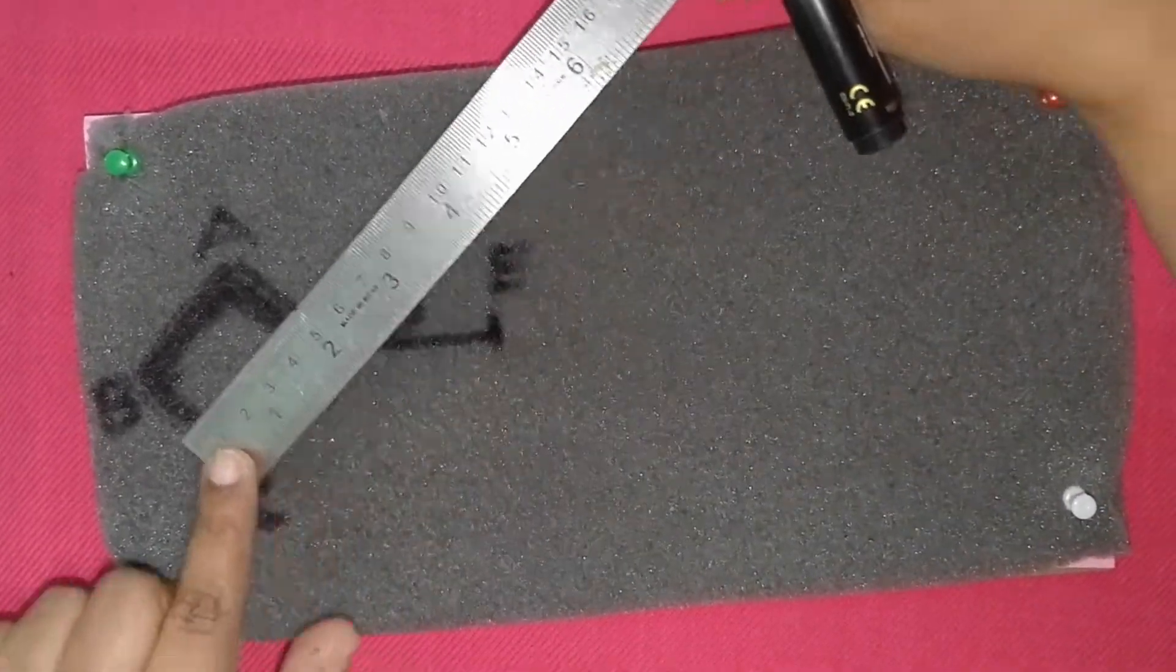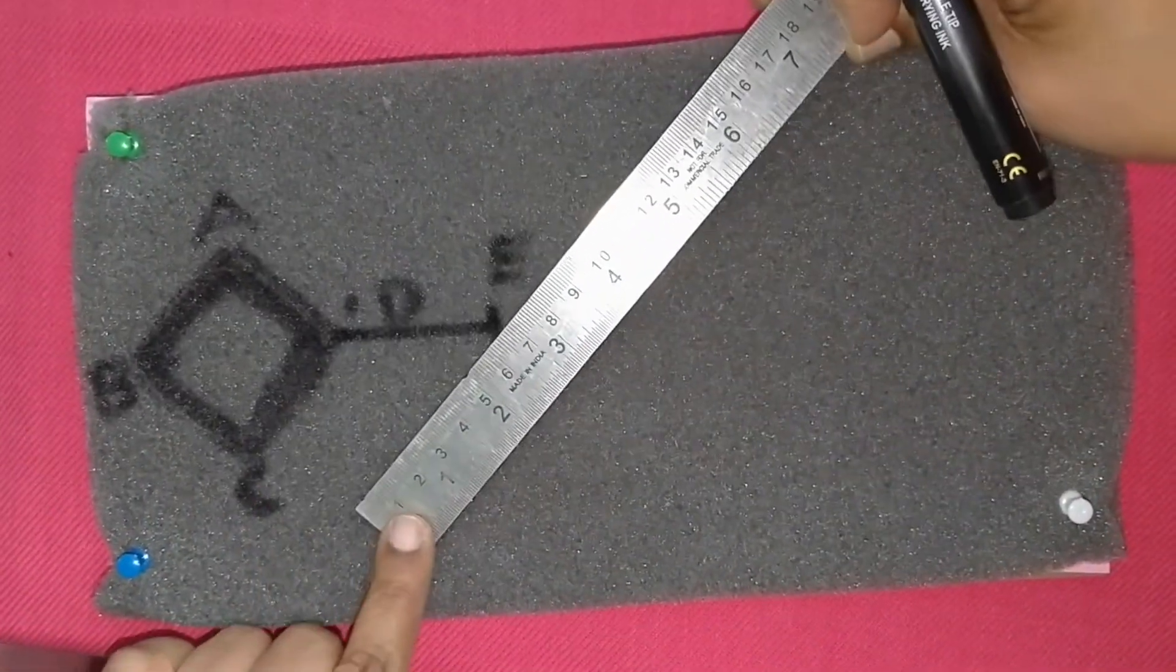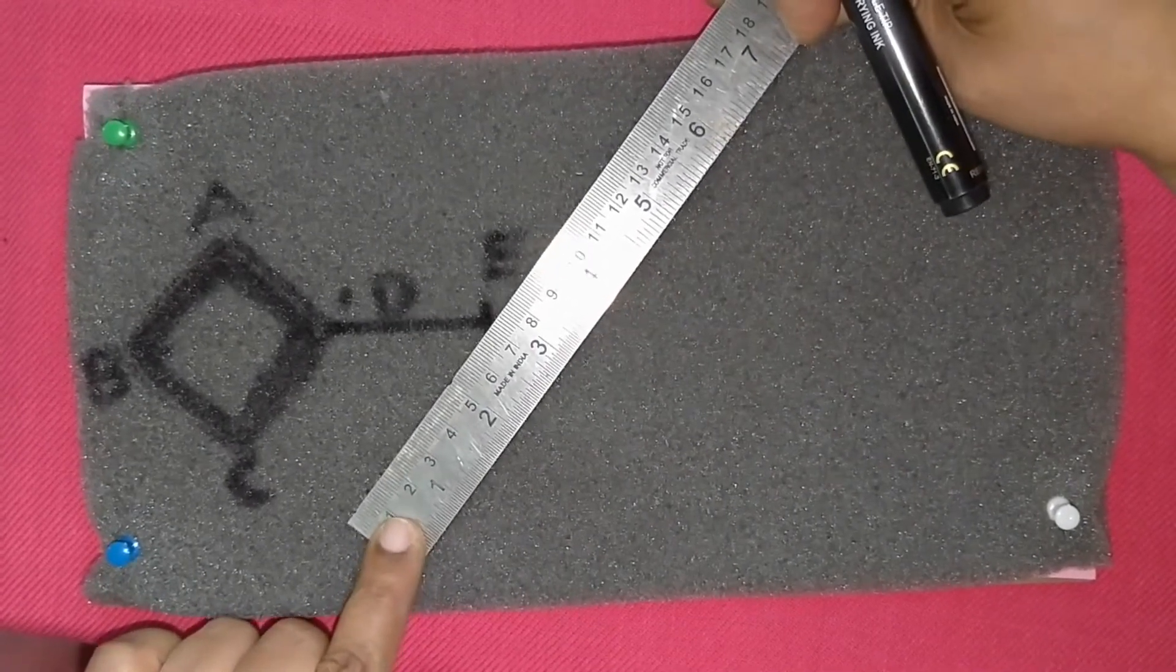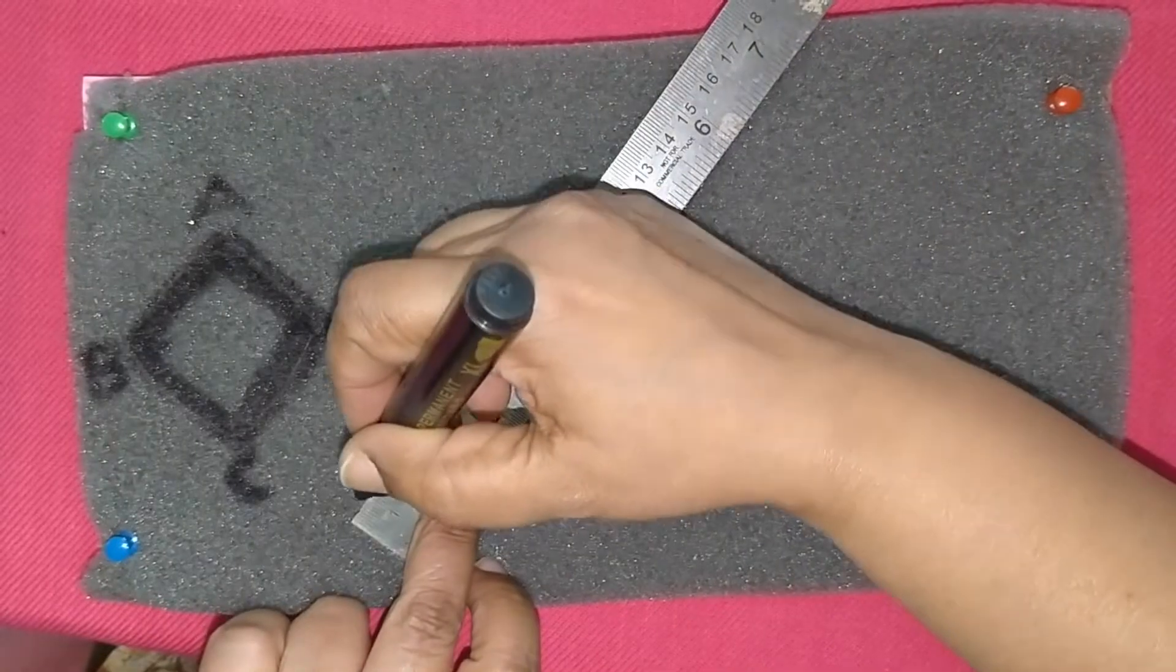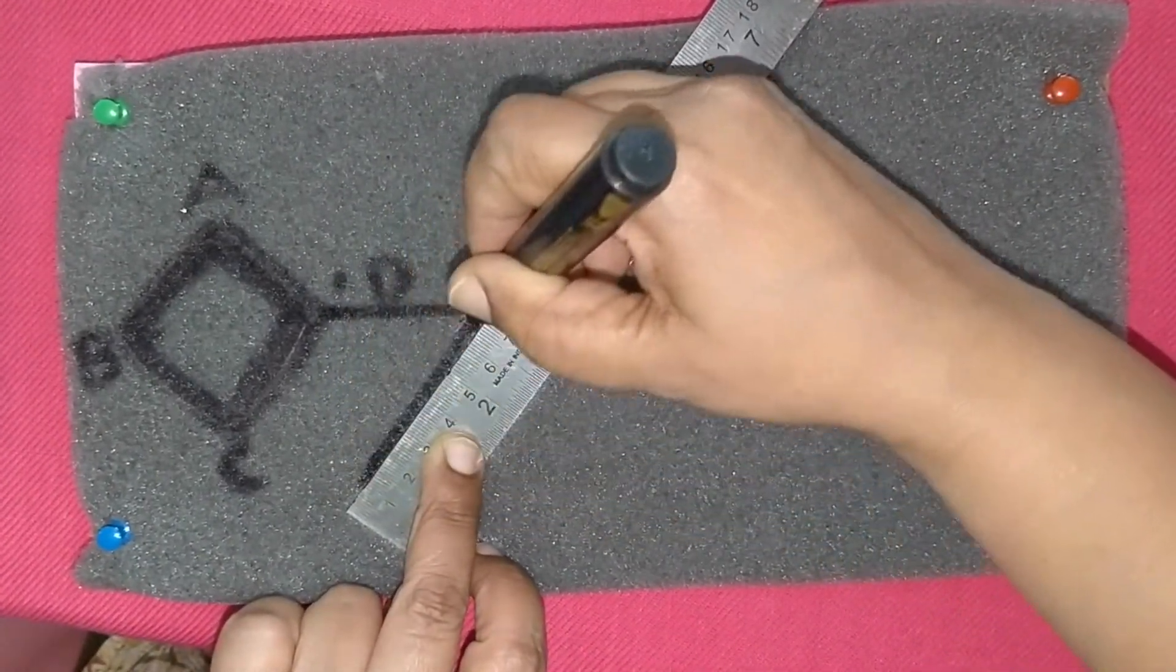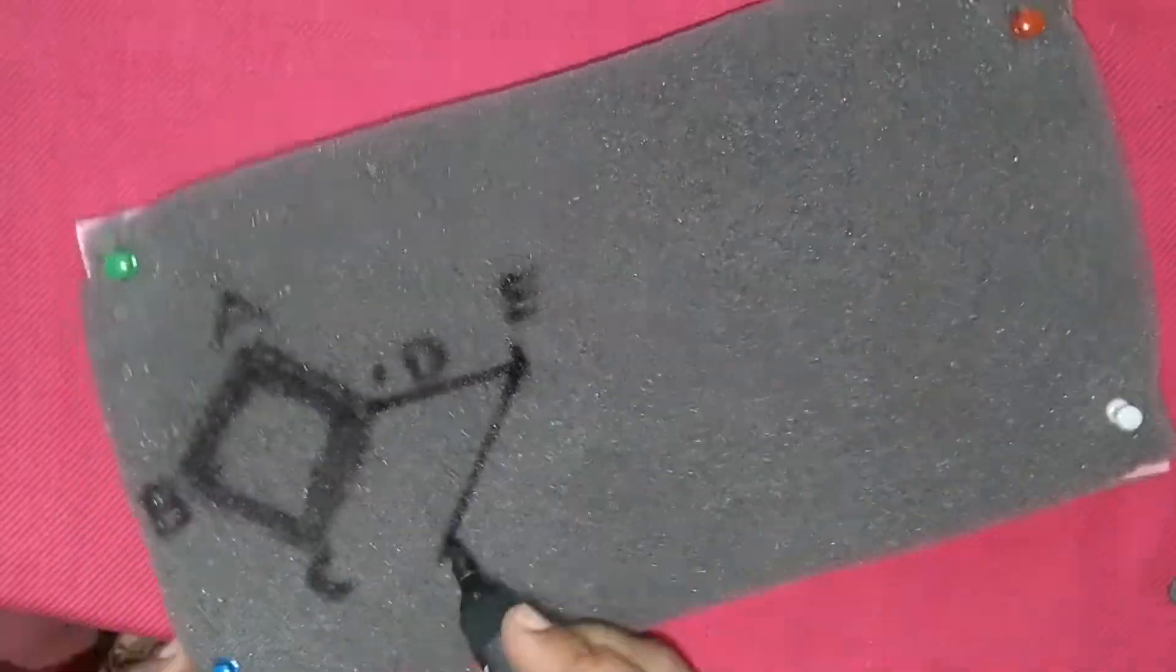Now a line is drawn parallel to the line C, D from the point E. This line E, F will be parallel to the side of the flap adjacent to the defect.